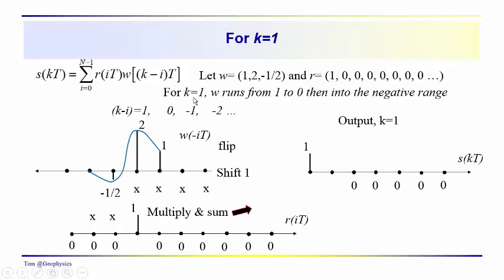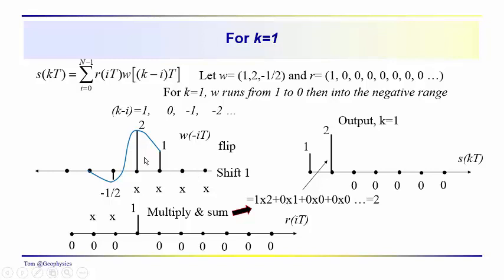Now we go to K equal one. K minus I runs from one, to zero, to minus one, to minus two. W has defined amplitudes at one and zero. Multiplying by the reflectivity sequence: one times the wavelet at sample one equals two. The reflectivity at I equal one is zero times the wavelet at value zero, and so on. We get reflectivity of one times two, plus zero times one, plus zero times zero — equal to two. So the second sample that pops out is two.